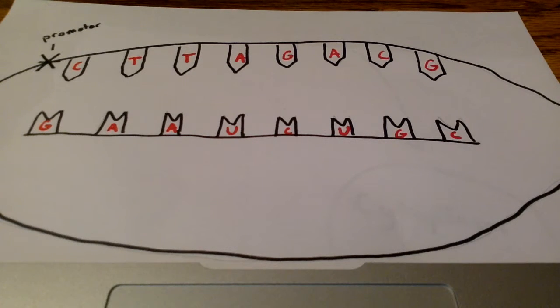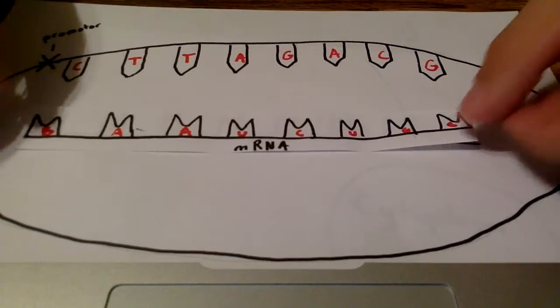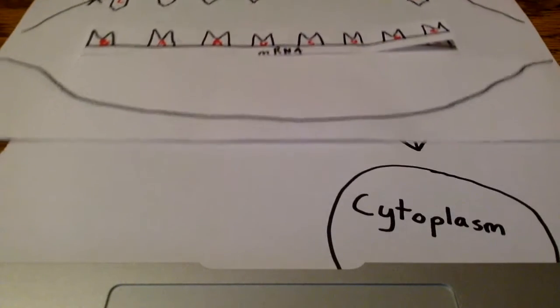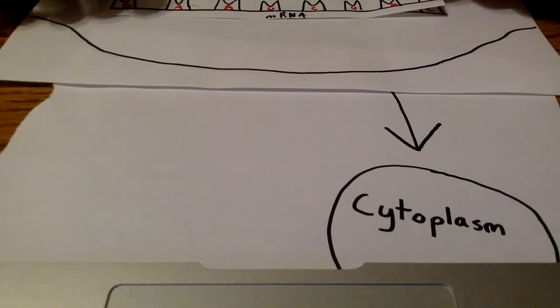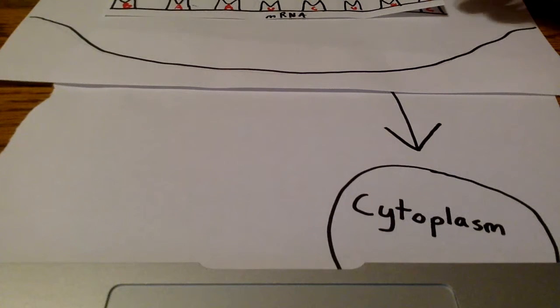This mRNA complementary strand will then be taken out of the nucleus and into the cytoplasm. In the cytoplasm, it will undergo splicing and translation.